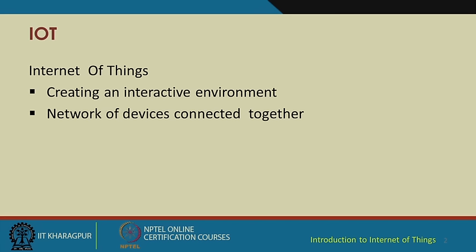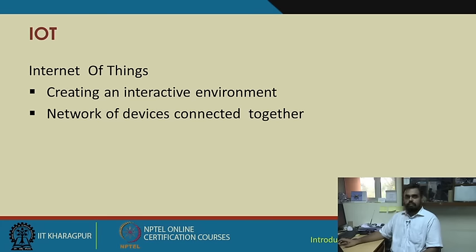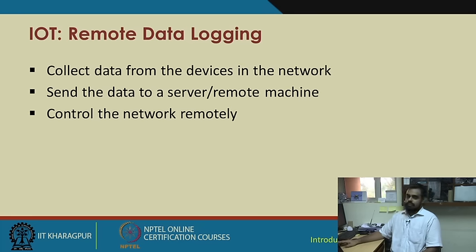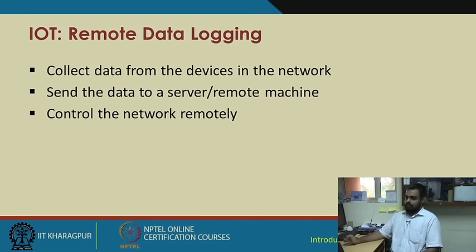The basic aim of the Internet of Things is to create an interactive environment of networked devices all connected together. The more the number of devices, the more intelligent and interactive your whole system should be — it should not be that you are increasing the number of devices whereas your system performance is going down. While maintaining system performance, device integration has to be made. In this lecture we are going to give a basic demonstration of what you have learnt, focused more on remote data logging.